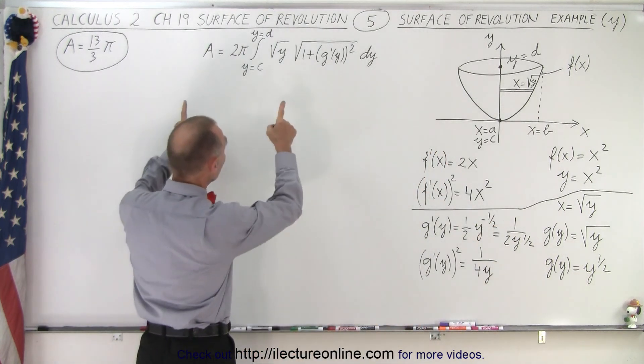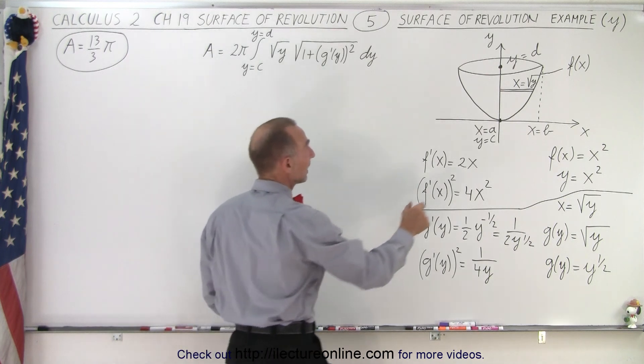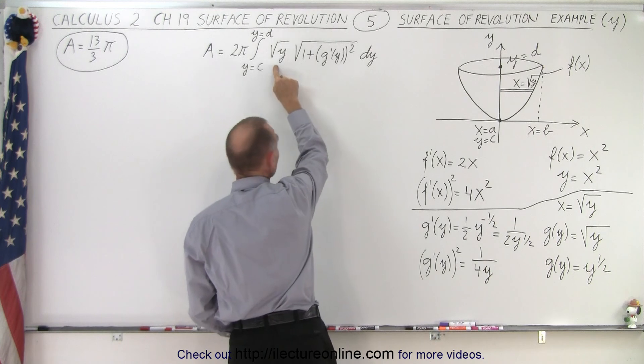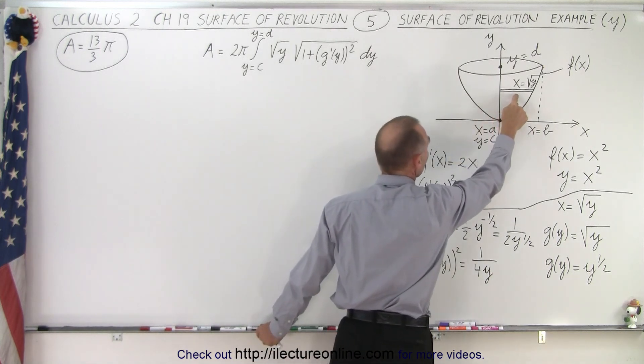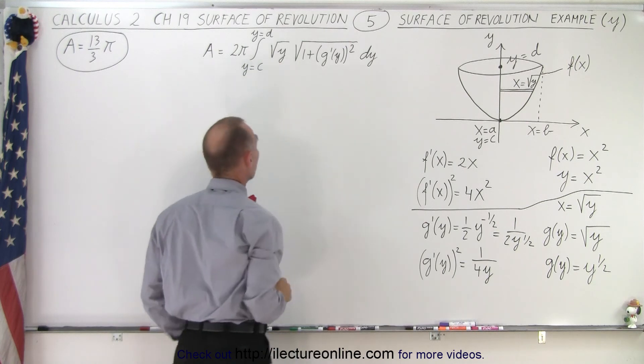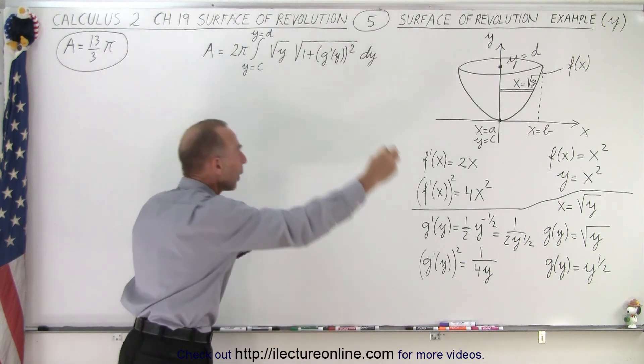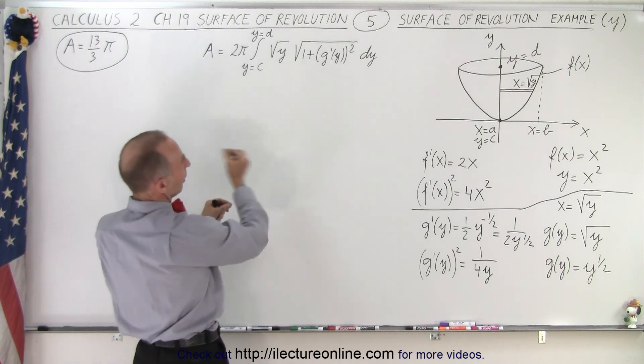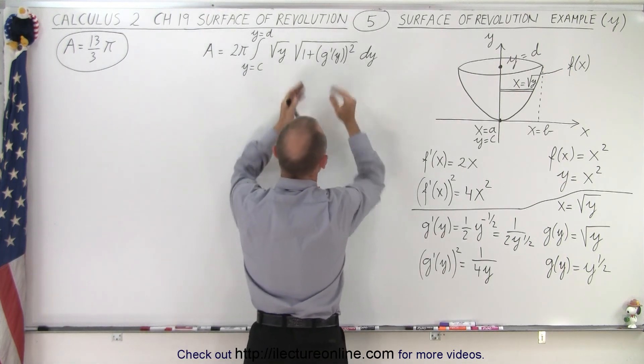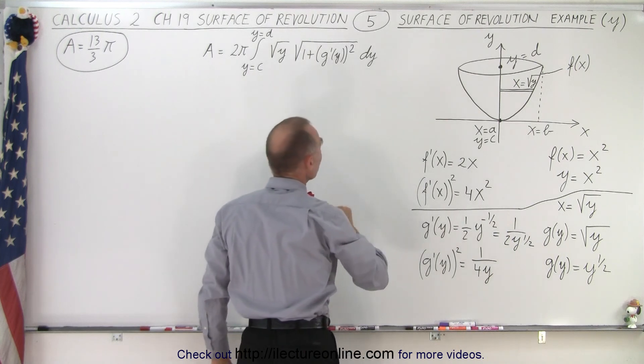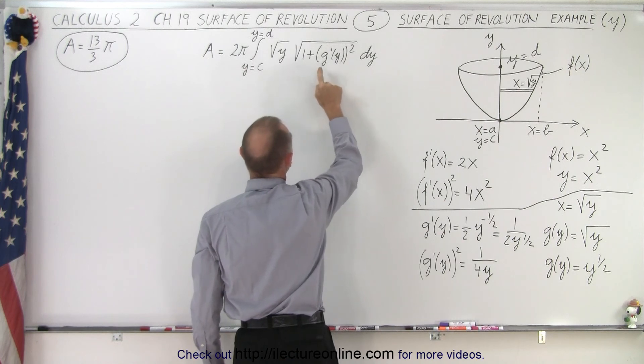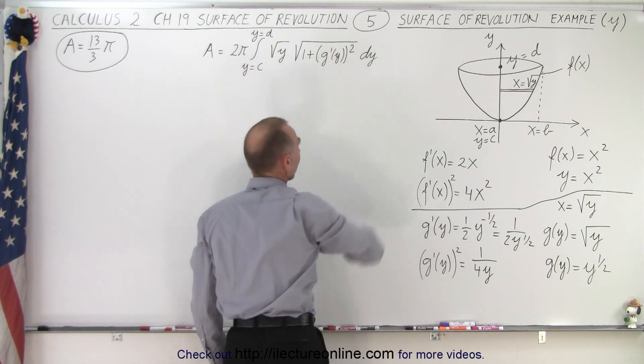So we plug all that into this equation here. Notice instead of using x for the radius, we're going to have the square root of y, so this is 2 pi times the radius, but the radius now is expressed in terms of y instead of x. That's 2 pi times the square root of y for the radius, when we revolve that around the y axis, and then we multiply that times the integral to find the arc length along the edge, and that's the square root of 1 plus g prime of y quantity squared times dy.